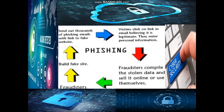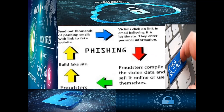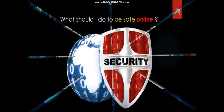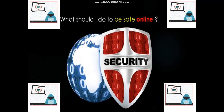The process of phishing: fraudsters build a fake site and send out thousands of phishing emails with a link to that fake website. Victims click on the link believing it is legitimate, then enter their personal information. The fraudsters compile the stolen data and sell it online or use it themselves.